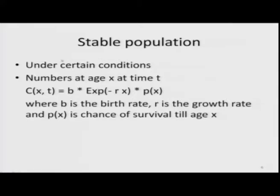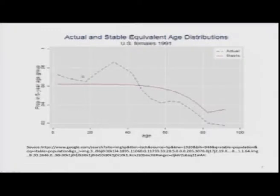The stable population model means that under certain conditions numbers at age x at time t may be expressed as c(x,t) = b × e^(−rx) × p(x), where b is the birth rate, r is the growth rate of population, and p(x) is the chance of survival till age x. Here is a comparison of actual and stable equivalent age distributions — the actual suffers from fluctuations, while the stable is a free-hand smooth curve.